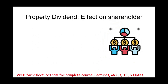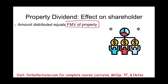Let's start with the effect on the shareholder. The amount received in a property distribution equals the fair market value of the property. When they give you an asset — a stock, a bond, a piece of property, inventory — the amount you receive is the fair market value of that property. Is that amount dividend? We go back to our basic rules: it's dividend to the extent of earnings and profit. If distributed from earnings and profit, it's dividend, which is taxable.